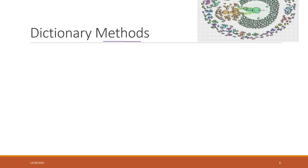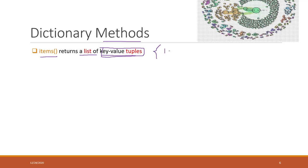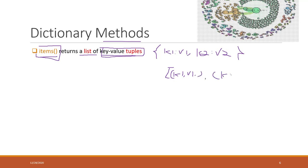Now let's look at dictionary methods. The items() method returns a list of all the key-value tuples. For a dictionary with k1:v1 and k2:v2, items() returns a list where (k1, v1) is the first tuple and (k2, v2) is the second tuple.